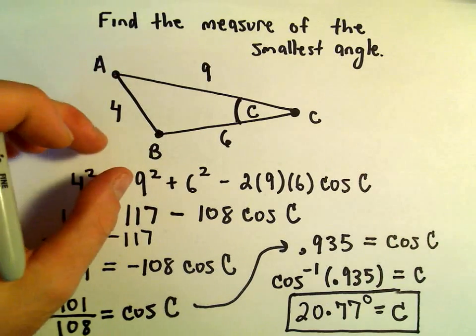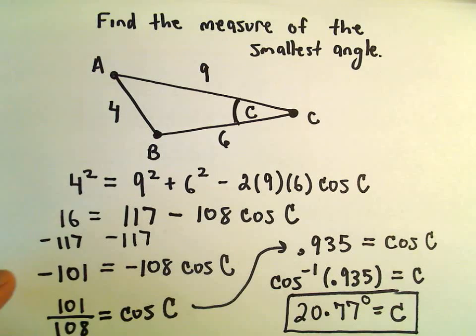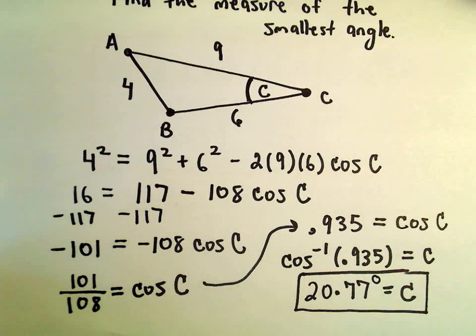Just remember that the smallest angle will be opposite the side of length 4. Using law of cosines and being careful with the arithmetic, that's all there is to it.